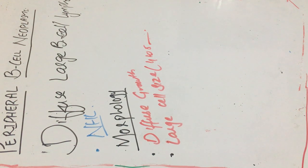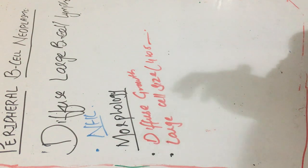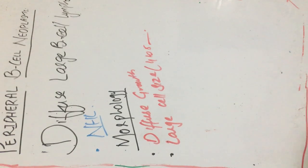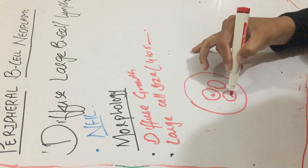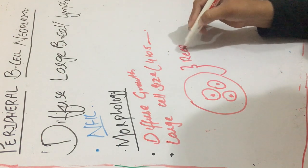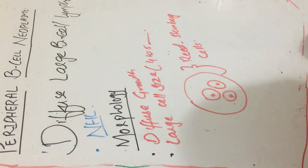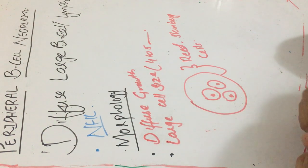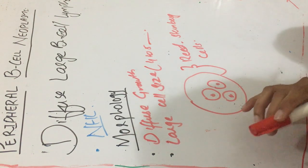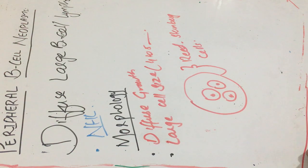In the anaplastic variety of diffuse large B-cell lymphoma, there are multi-nucleated cells containing large inclusion-like nuclei. These cells are known as Reed-Sternberg cells. They are mainly present in Hodgkin lymphoma, but they are also present in this variety of peripheral B-cell neoplasm — diffuse large B-cell lymphoma.